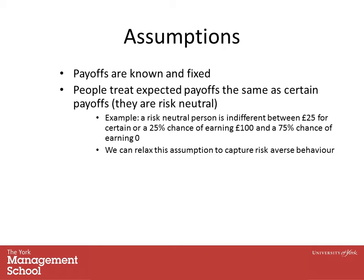We also assume people are risk-neutral. That means a person would treat £25 for certain the same as a 25% chance of earning £100 and a 75% chance of earning nothing. This flies in the face of diminishing marginal utility — the more money you already have, the more likely some people are to take the certain £25 rather than the 25% chance of £100. People who need the money less may say £25 makes little difference and it's worth waiting for £100.